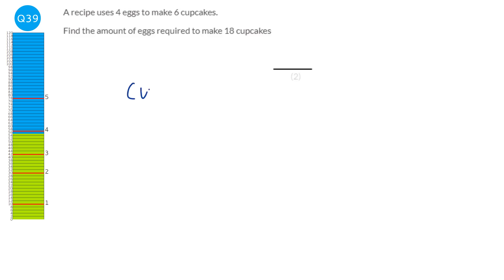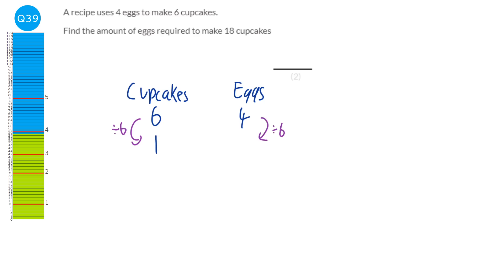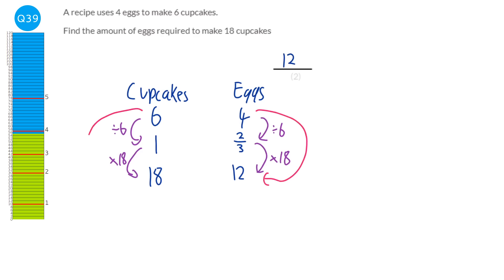Six cupcakes requires 4 eggs. We divide both sides by 6 — one cupcake needs two thirds of an egg. For 18 cupcakes we multiply both sides by 18: two thirds times 18 is 12 eggs. We could also have gone straight there by multiplying both the cupcakes and the eggs by 3.